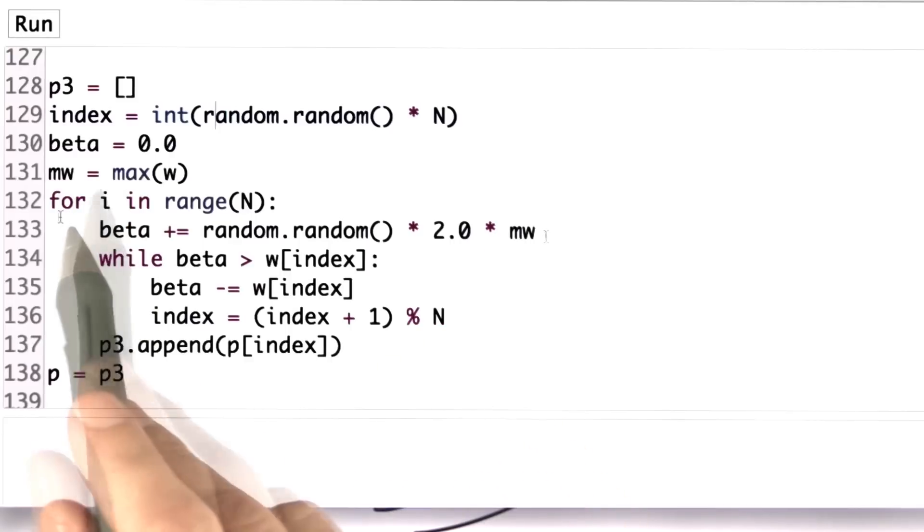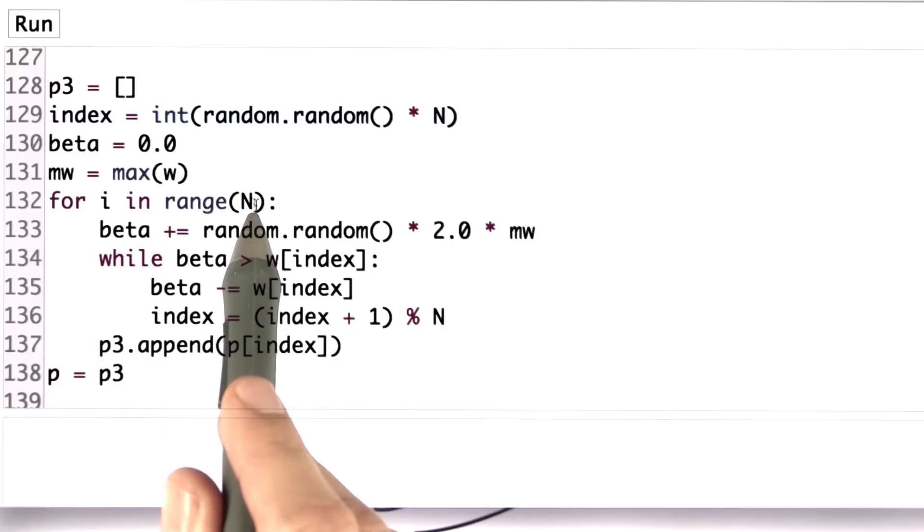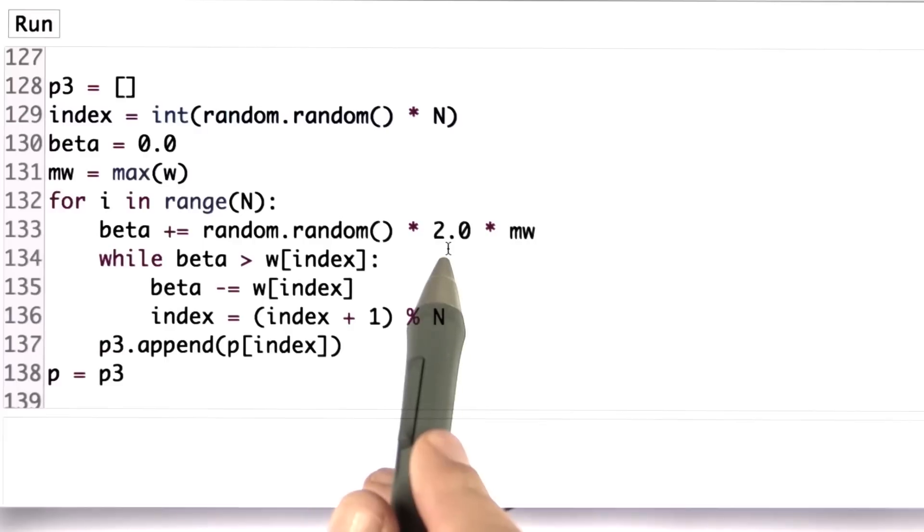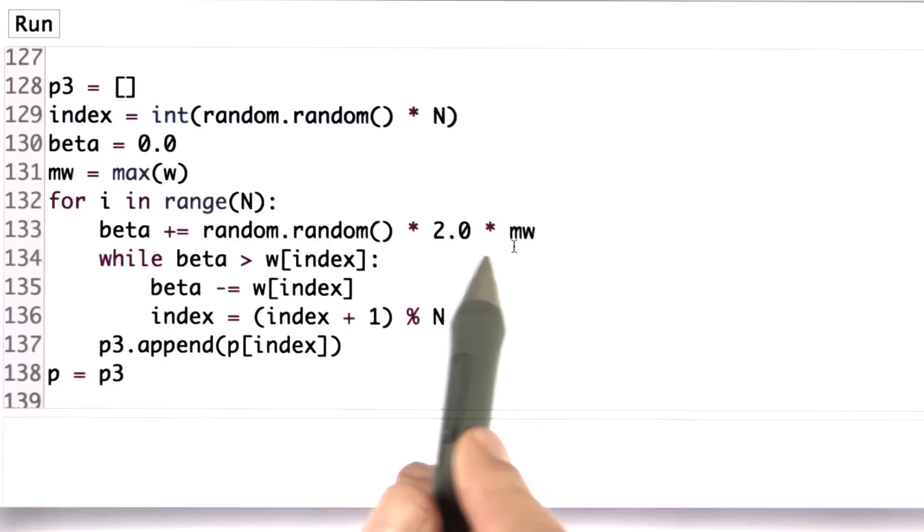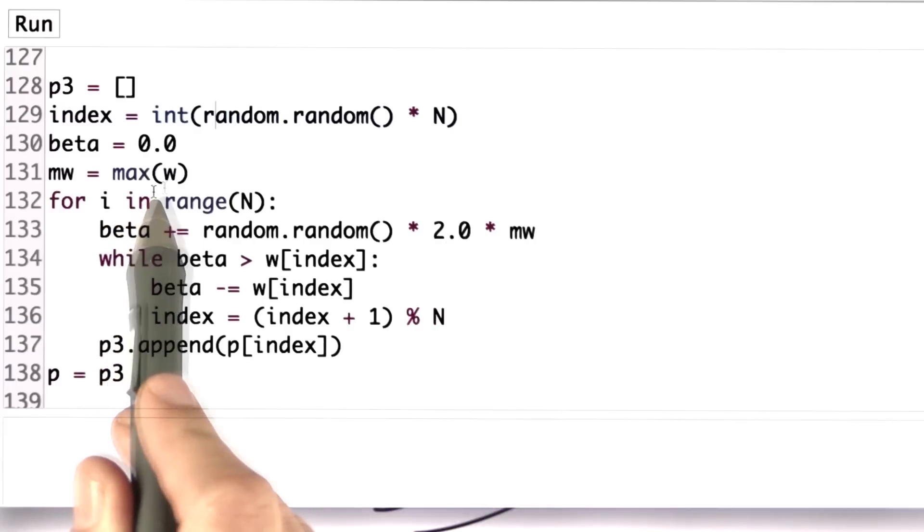You could have max over here. But then I go and produce exactly n particles. And the way I do this, I add to beta a uniform random that is twice as large in maximum in the range, as my max weight w.